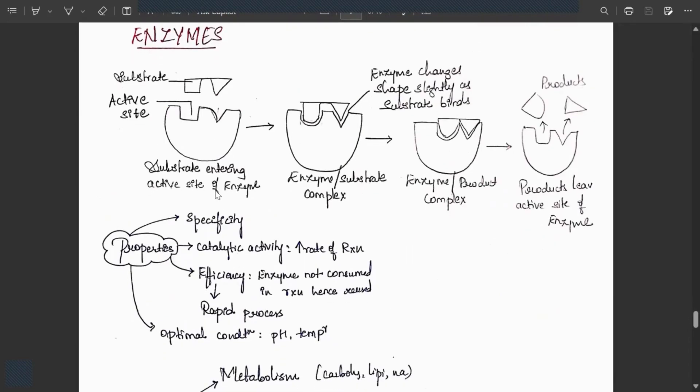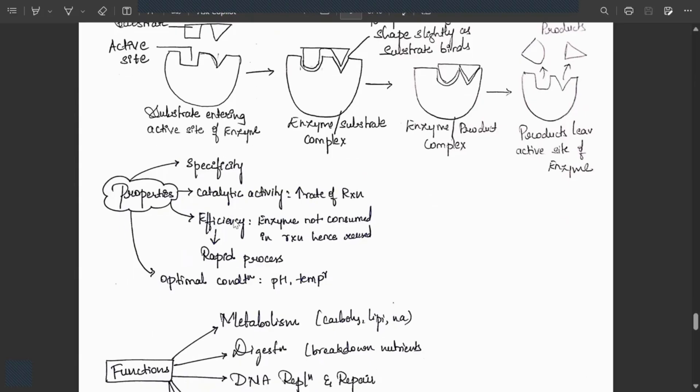Enzymes: substrate enters the active site of the enzyme. Here a complex is formed. The enzyme changes shape slightly as substrate binds and gets modified. The enzyme-product complex forms, giving two products. Products leave the active site of the enzyme. Properties: specificity and catalytic property increase rate of reaction. Efficiency: enzyme is not consumed in the reaction, can be reused again and again, helping rapid processing. Optimal conditions depend on pH and temperature.